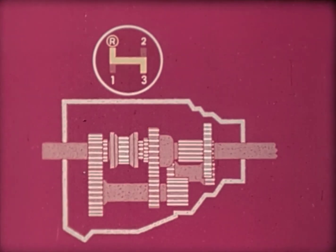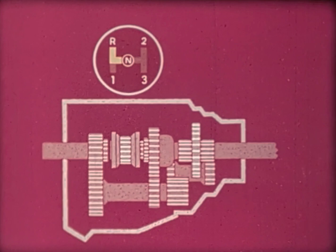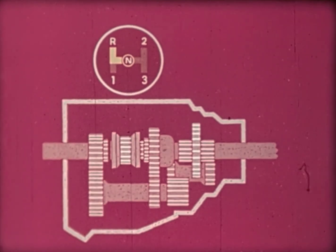Some manual transmissions may have four or more forward speeds. Of course, there's also a reverse setting so that you can back up the car when you have to, and neutral, in which there is no connection between input and output.